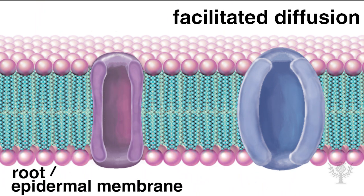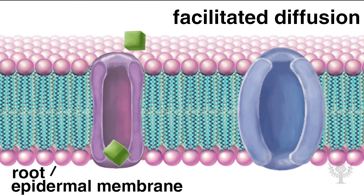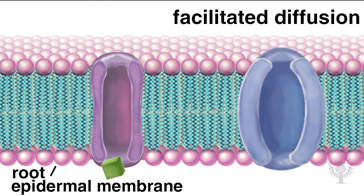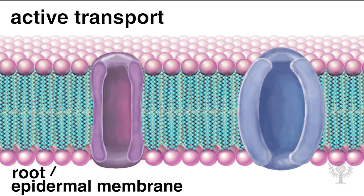Diffusion of mineral salts occurs at the same time. Facilitated diffusion occurs when important molecules pass through the membranes via special holes called channels. Active transport of other molecules may also take place in the root hair,